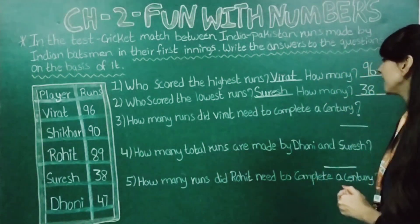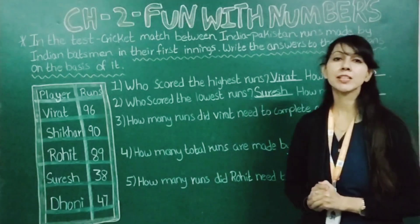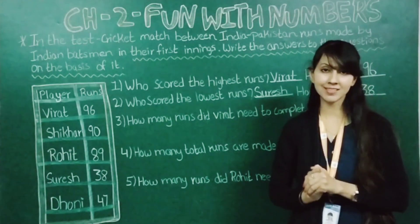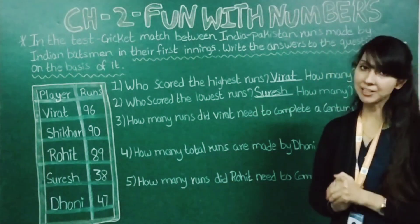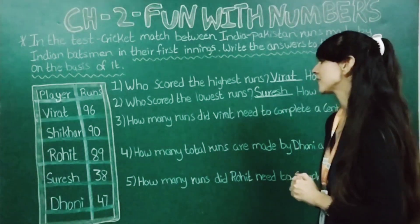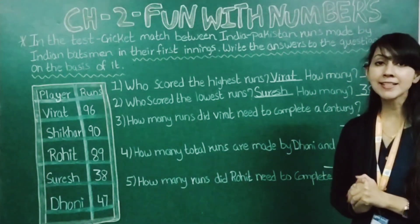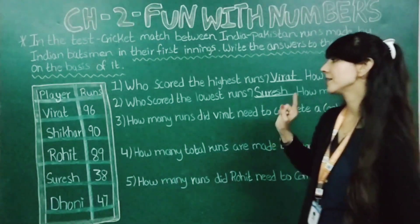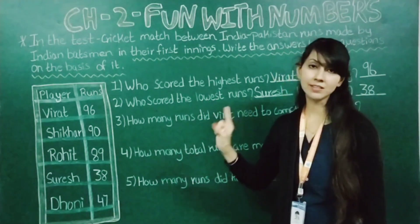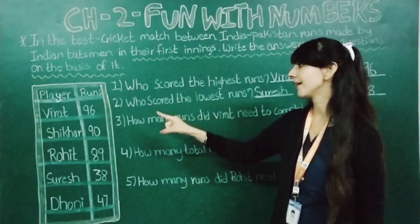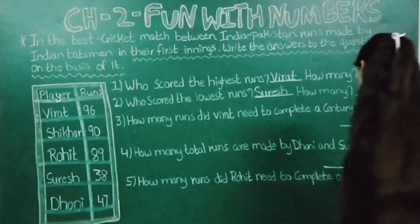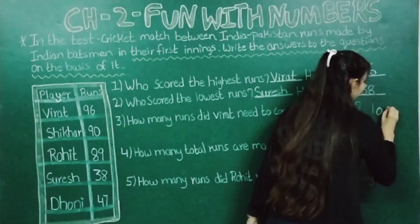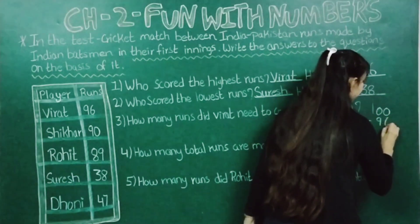Now moving to the next question: how many runs did Virat need to complete a century? A century is a score of 100 or more than 100 runs. So with the help of subtraction you will see. Virat has made 96 runs, so we will just subtract this from 100. Here we will write 100 minus 96.